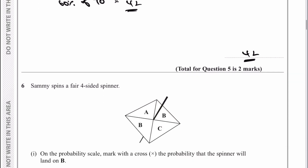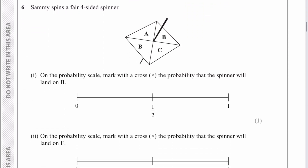Let's move on then to a probability type question. Sammy spins a fair four-sided spinner — the important thing here is a fair spinner, so the probability of it landing on any one of the four sides is exactly the same: they're all 25%, all one quarter. On the probability scale, mark with a cross the probability the spinner will land on a B. There are actually two Bs, so it's going to land on B half the time — two out of four — which is exactly the same as saying half. So I can put an X there on the half.